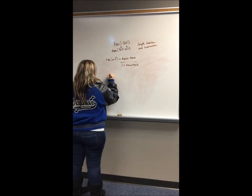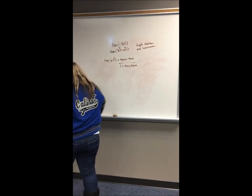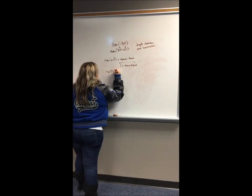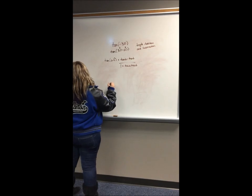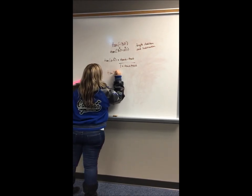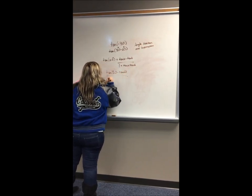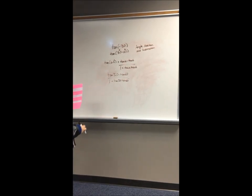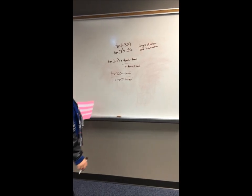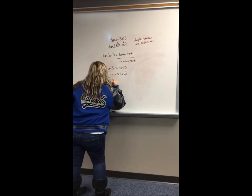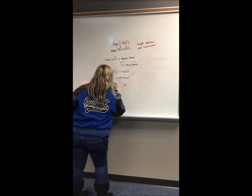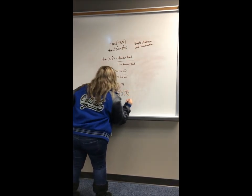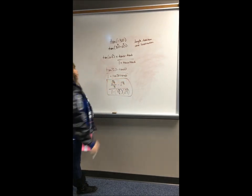Now we can plug in what we know. That will be tangent of 30 minus tangent of 60, over 1 plus tangent of 30 times tangent of 60. Changing to actual tangent values, it becomes square root of 3 over 3, minus square root of 3, over 1 minus square root of 3 over 3 times square root of 3. We can't simplify this anymore, so this is going to be our final answer.